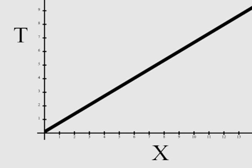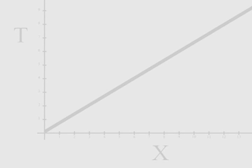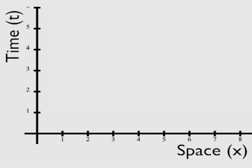This graph shows how the object's motion in the x dimension changes as time changes. In relativity, understanding how an object moves in spacetime is of utmost importance. To visually represent this, we construct what's called a spacetime diagram. In a spacetime diagram, we plot time on the vertical axis and the spatial dimension on the horizontal axis. This allows us to see how an object is moving through spacetime.